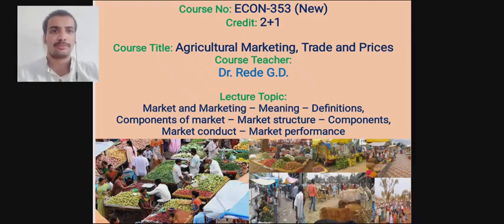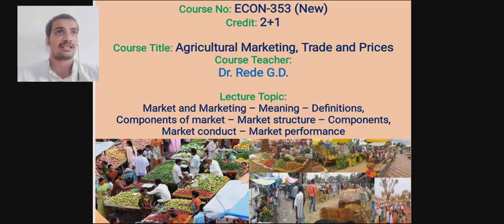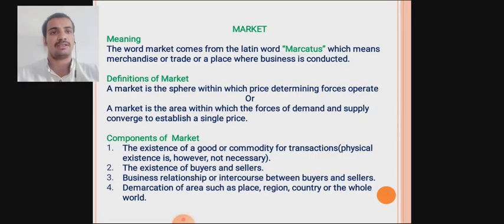Good morning. Today we will start our first lecture of our new course, Econ 353: Agriculture Marketing, Trade and Prices. Today we have to see the topics: what is meant by market, marketing meaning and definition, what are the components of market, what is market structure, what are the different components of market structure, and what is market conduct and market performance. We will see these one by one.